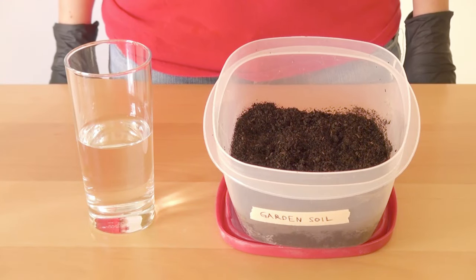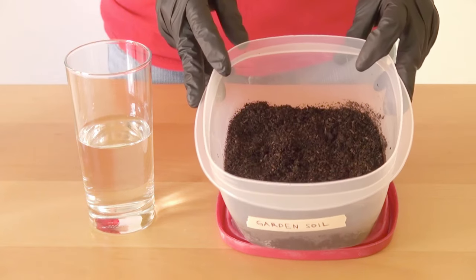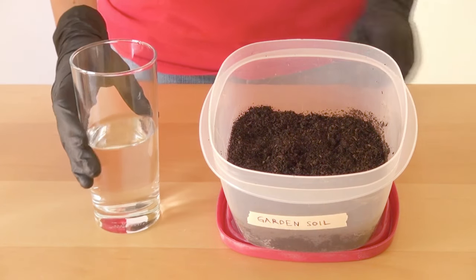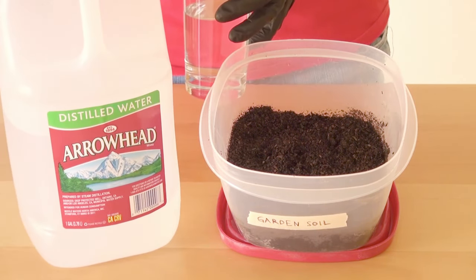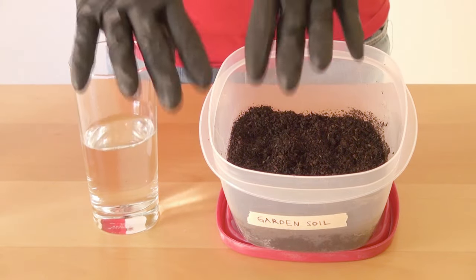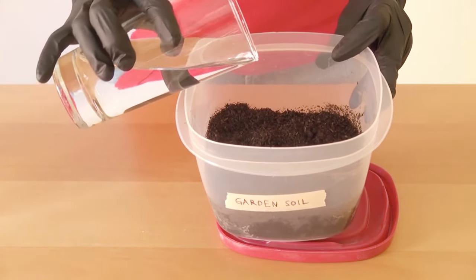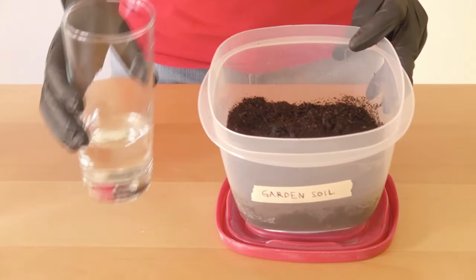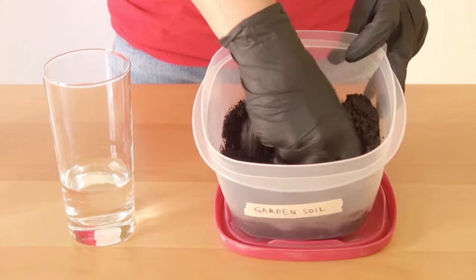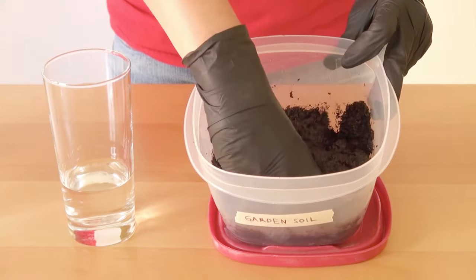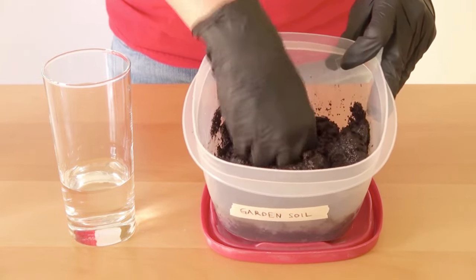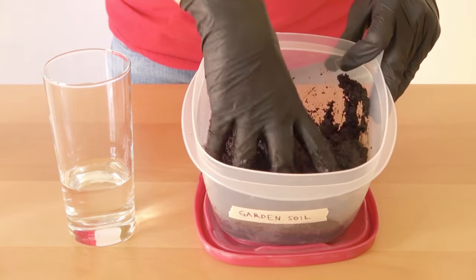The next step is to prepare your soil. First, grab the soil that you collected and get a glass of water, which should be distilled water. Don't forget to wear your gloves. Pour the water into the soil to make a moist mixture. Mix it with your hands until you have a cookie dough-like consistency. It shouldn't be too wet, but also not too dry.